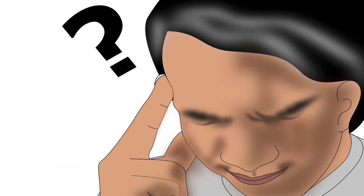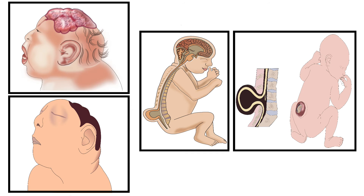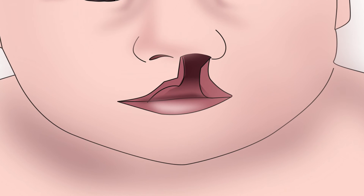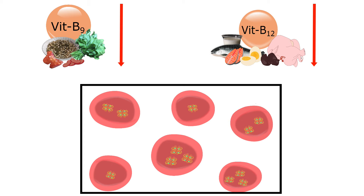Long-term deficiency can reduce memory and attention span. Folate deficiency in pregnant women may negatively affect babies, causing neural tube defects and cleft lip and palate. A cleft is a gap or split in the upper lip or roof of the mouth, occurring when tissues do not fuse together during growth in the womb. Folate or vitamin B12 deficiency results in macrocytic anemia.